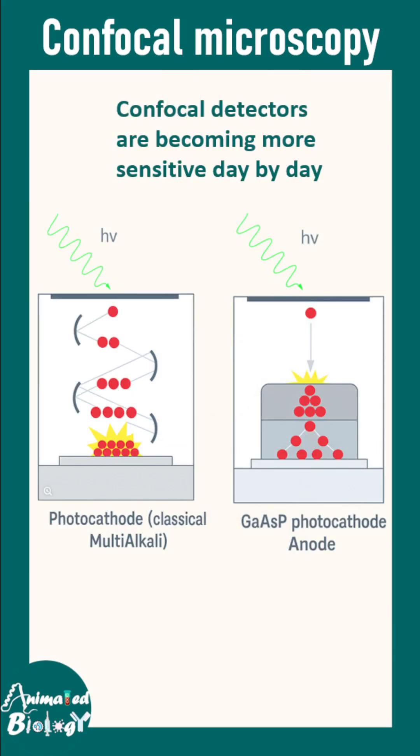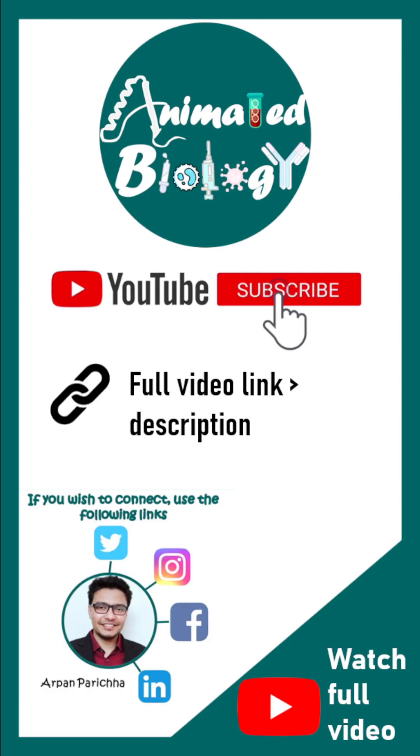These days confocal detectors are getting better and better. Instead of multi-alkali photocathodes, gallium arsenide phosphide photocathodes are now used, which are much more sensitive. The latest generations are silicon detectors. If you want to learn more, watch the full video.